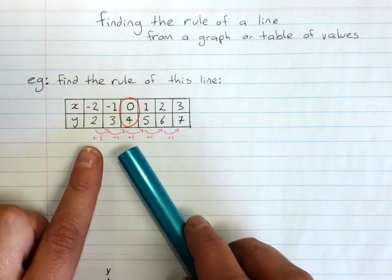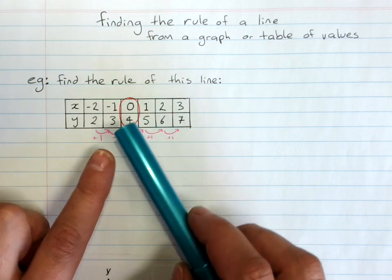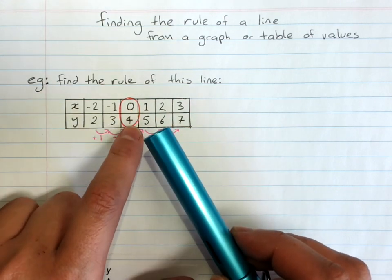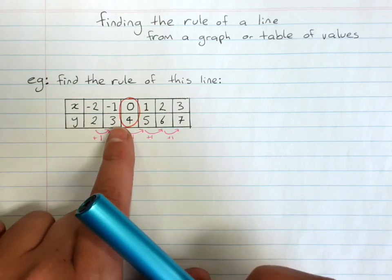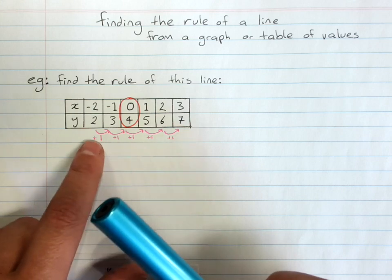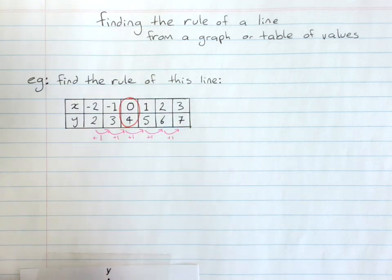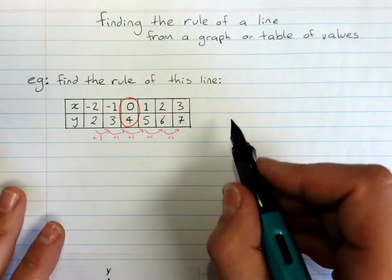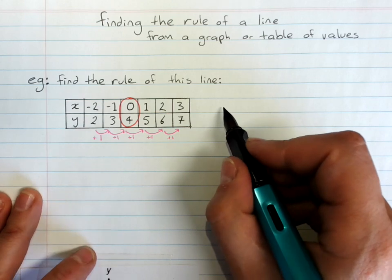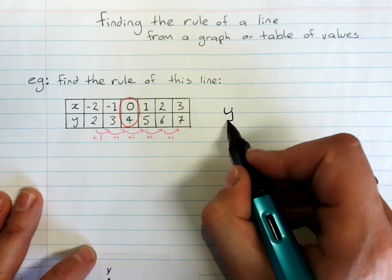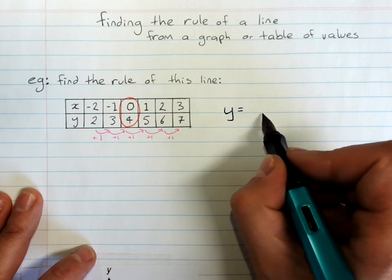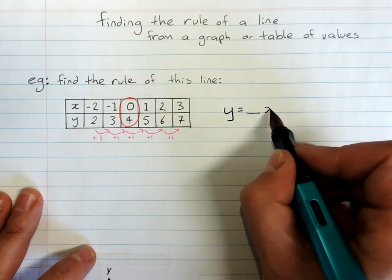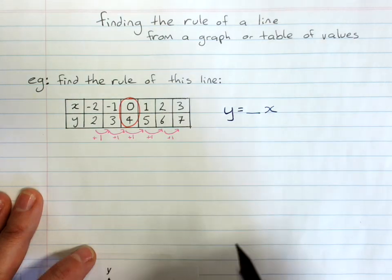These are the two numbers that go into the rule. Because I keep telling you, the number when x is zero is the number that's on its own in the rule. And the number that's the pattern is the coefficient of x. And every straight line is going to have y equals a number in front of the x and possibly a number on its own.